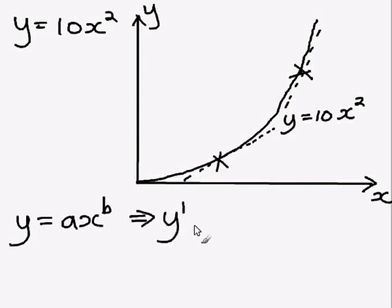is you put the b out in front, multiply it by the a, multiply that by the x, and then reduce the power of the x by 1.